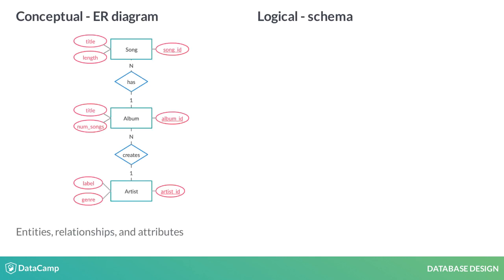Here is a simplified example of where we want to store songs. In this case, the entities are songs, albums, and artists with various pink attributes. Their relationships are denoted by blue rhombuses. Here we have a conceptual idea of the data we want to store.